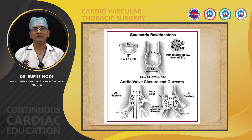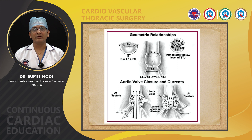Now let's learn about the geometric relationship. Each aortic cusp has a free margin as well as a base. The base is attached to the aortic annulus. Normally the base is 1.5 times larger than the free margin. The sinotubular junction is where the sinuses end and the ascending aorta starts. The sinotubular junction is usually smaller than the aortic annulus — the aortic annulus is 15 to 20% larger than the sinotubular junction.